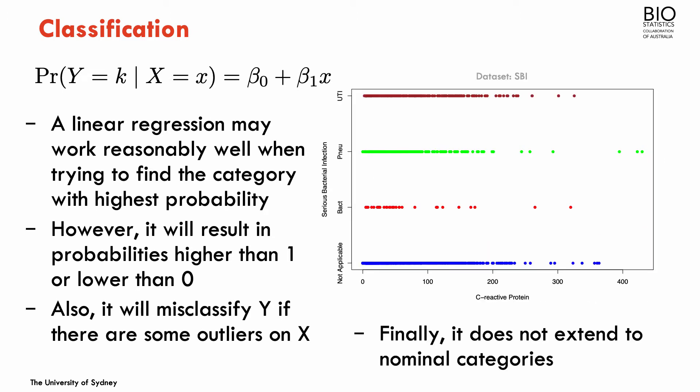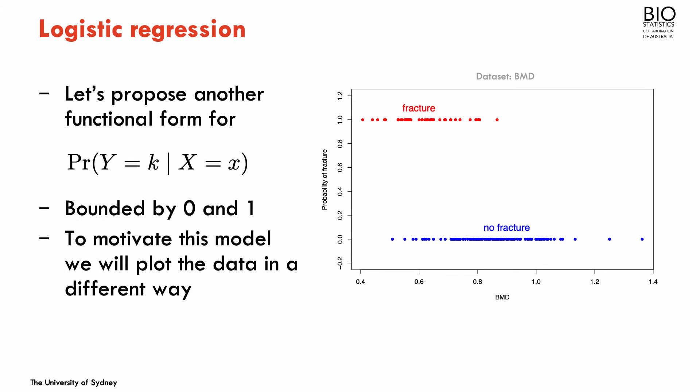Also, if the outcome has more than two categories and those categories are not ordinal — as is the case of the SBI dataset, where the four categories of serious bacterial infection have no order — it doesn't even make sense to think about a linear relationship between one of the predictors, like C-reactive protein, and the categories. So, can we have a better functional form for the probability that is bounded by 0 and 1?